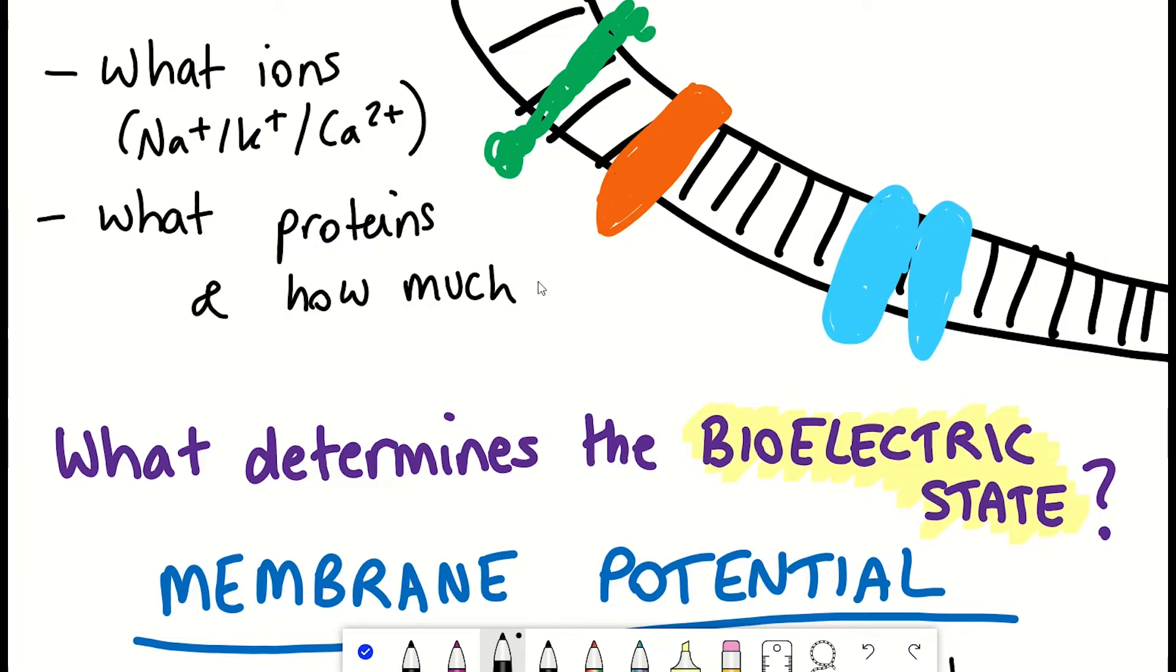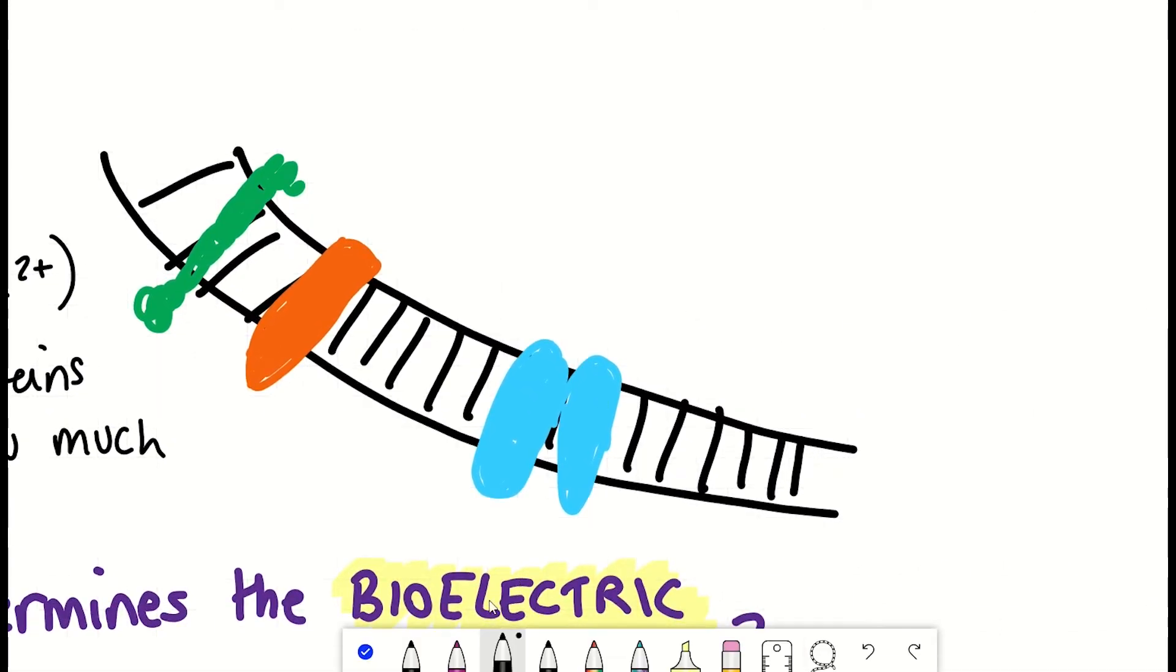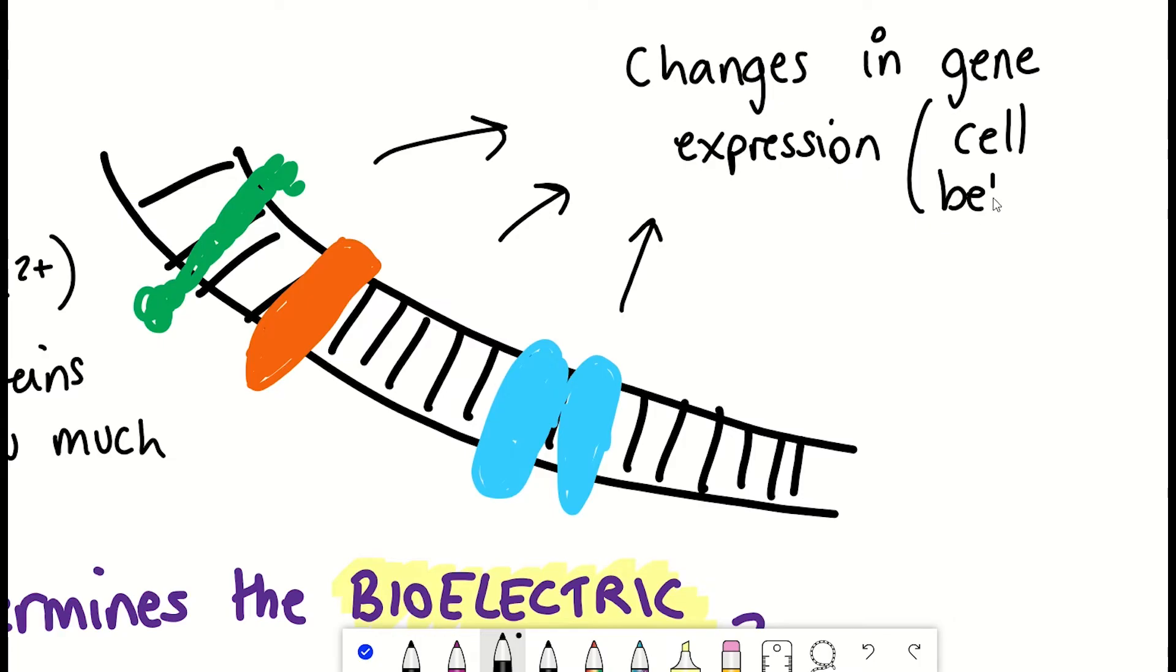Well, many things. But frankly, that isn't what we're going to focus on here. What's important to understand is that in response to changing environments, the activity of these channels can change, and with it, the resting potential. This change in potential can generate a signal within the cell to lead to the appropriate response, for example, a change in gene expression.